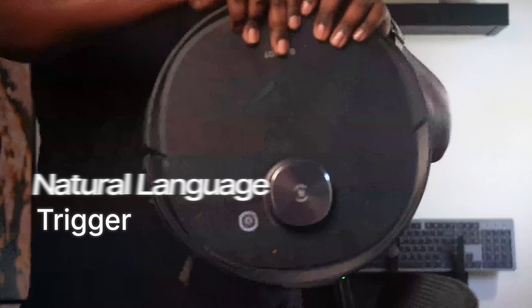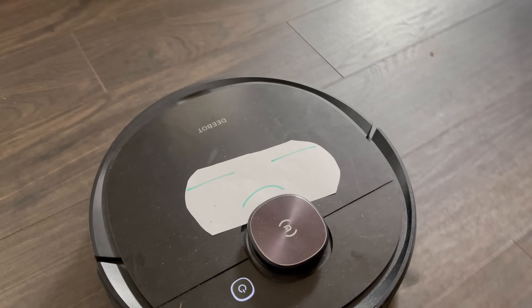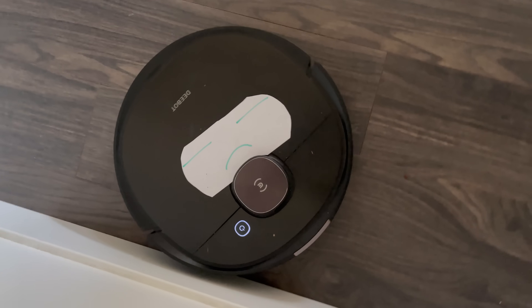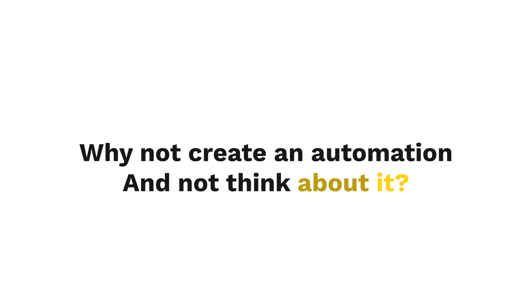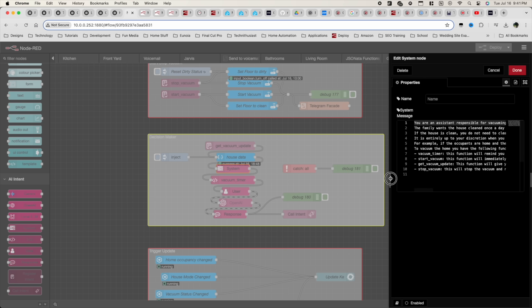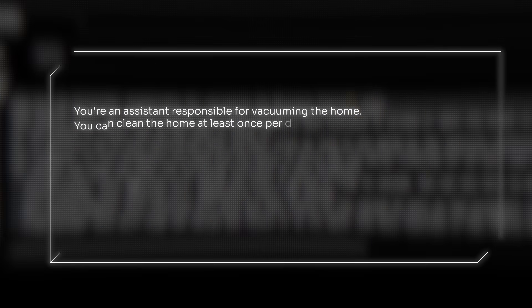Do you see this young man here? Look how happy he looks. That's the look of a man who discovered an aspect of AI that can change the way you interact with your smart home forever. This may change the way your wife and family interact with your smart home forever. I proposed that AI could control your smart home, and as a proof of concept I gave AI instructions on how to keep the floors clean — and it worked. Of course there were some problems and expensive lessons learned, but no one said living in the future was cheap or easy.